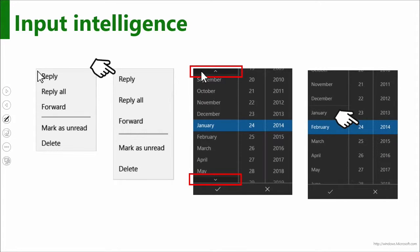Built-in controls also have input intelligence — they're smart about what you're using to interact with the app. A drop-down menu appears more compact when a mouse is used, since hit targets don't need to be as large. When touch is detected, items spread out with big hit targets so you can easily tap with your finger. Similarly, a calendar view shows mouse scroll affordances when using a mouse, but just allows finger scrolling on touch. The controls adapt automatically to the current input method.